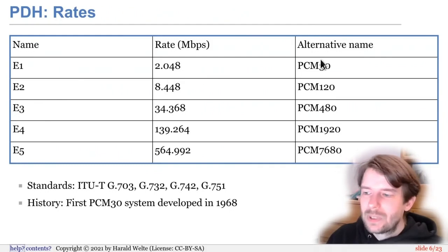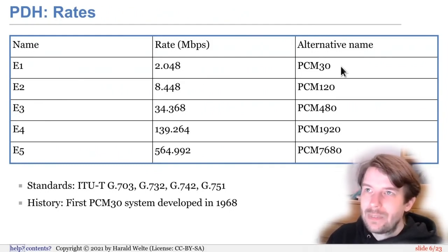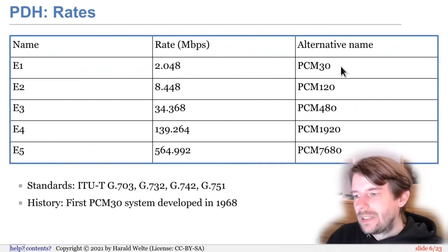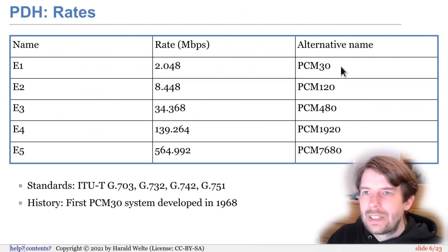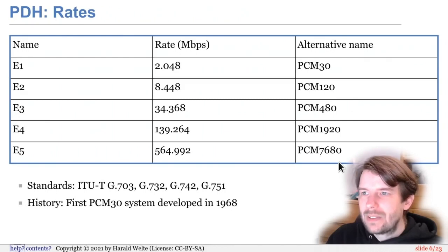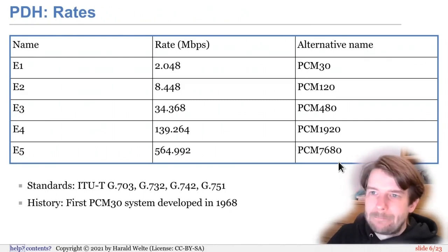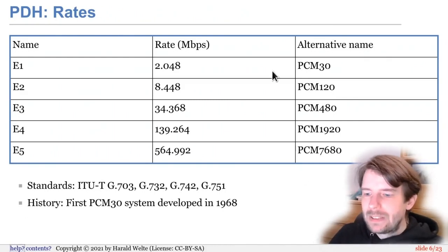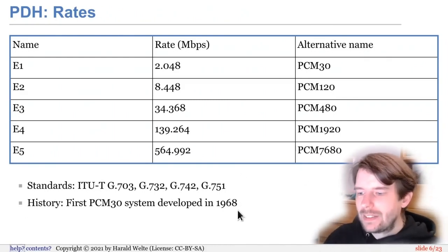There are two additional time slots: TS0 for frame alignment and usually TS16 for telephony signaling. So we have 32 64-kilobit slots, but only 30 are used for voice calls. In the PCM naming scheme, only the actual user channels are counted. All of this was developed already in the 1960s.